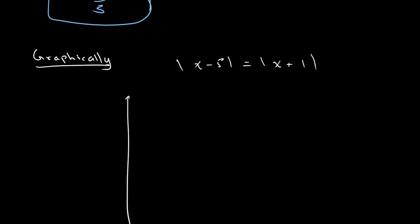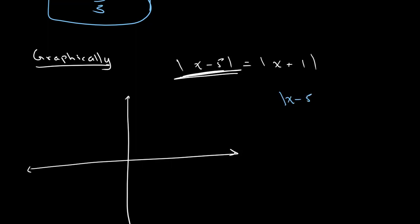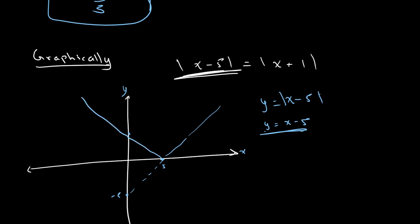If you don't know how to draw absolute value graphs, I have a video on this in my chapter for functions. First, let's draw the graph of the absolute value of x minus 5. We start with y equals x minus 5: it meets the y-axis at negative 5 when x equals 0, and meets the x-axis at x equals 5. We then reflect the negative portion, giving a V-shape with vertex at the point 5 on the x-axis.